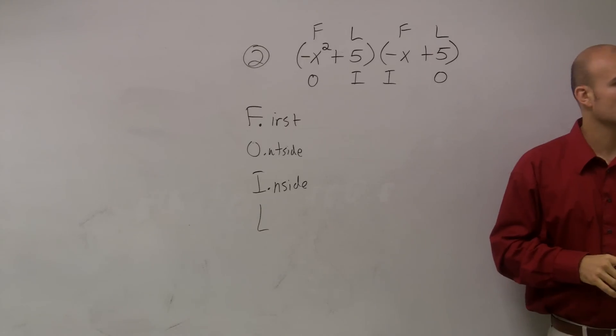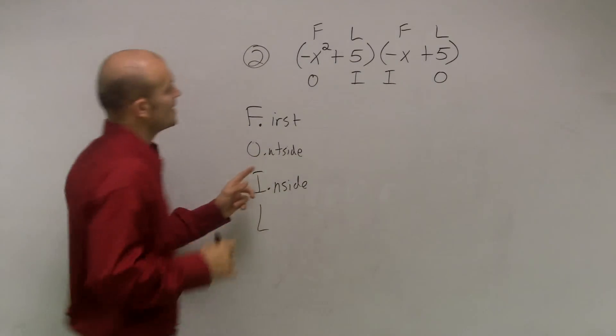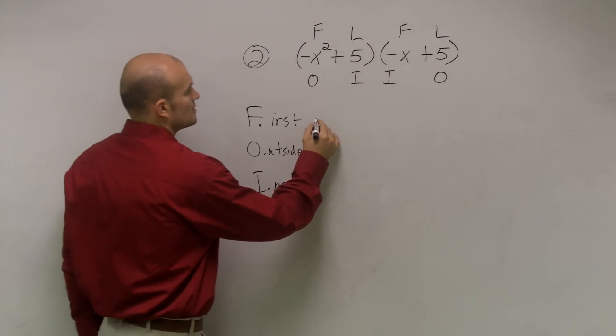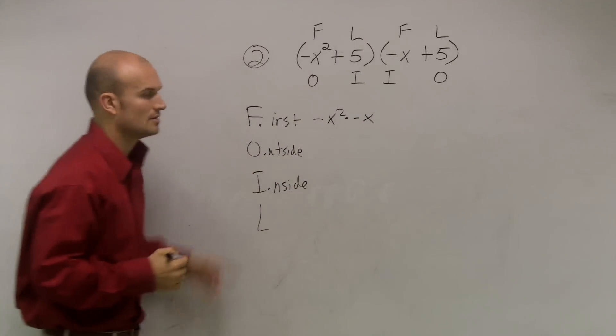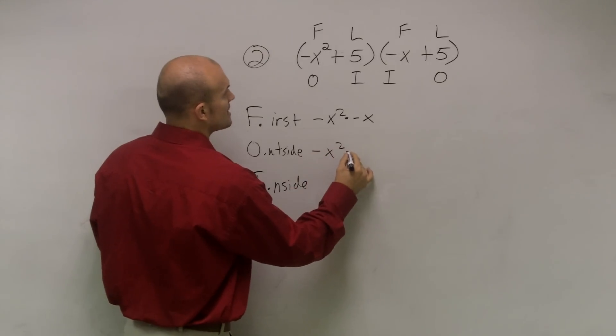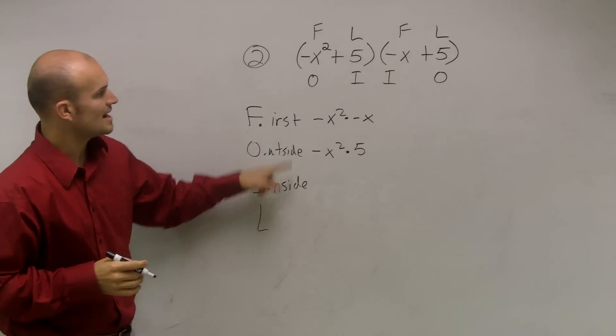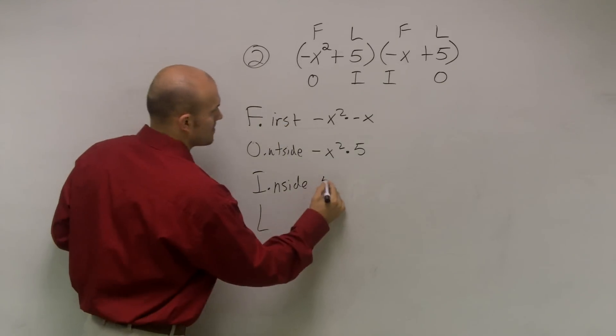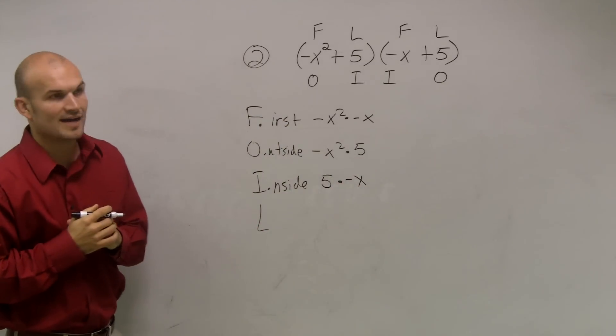Now, ladies and gentlemen, all we're going to do is just multiply each one of those terms. So the first, I said to multiply negative x squared times negative x. So just write it out. Negative x squared times negative x. Outside, multiply these terms. Negative x squared times 5. Inside, 5 times negative x. And last, 5 times 5.